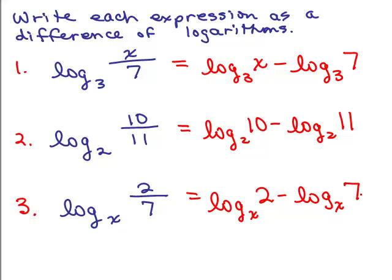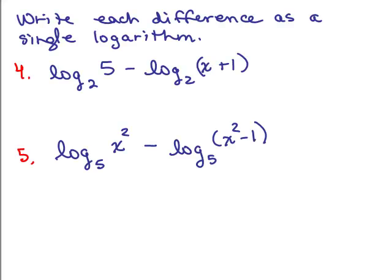Now we're going to go the other way around. Here are two problems: write each difference as a single logarithm. Each difference is the same thing as the log of the quotient. So the 5 goes in the numerator and x plus 1 goes in the denominator. You can put parentheses around that if you want.